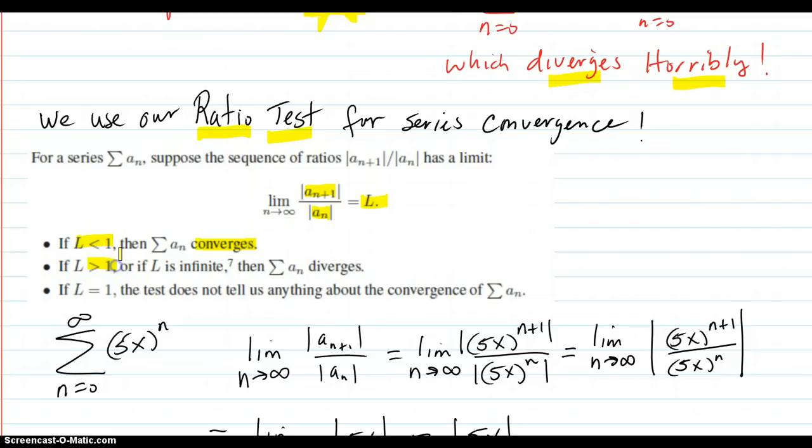If L is greater than 1, or if L is infinite, then the series diverges. If L equals 1, the test is inconclusive.